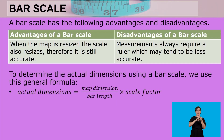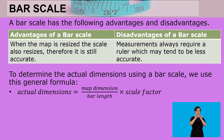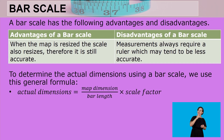A bar scale has the following advantages and disadvantages. The advantage is that when the map is resized, the scale also resizes, therefore it is still accurate. When you reduce the size of the paper, which reduces the size of the drawing, a bar scale is also a drawing of sorts, so it reduces proportionally, meaning the scale remains valid and accurate.